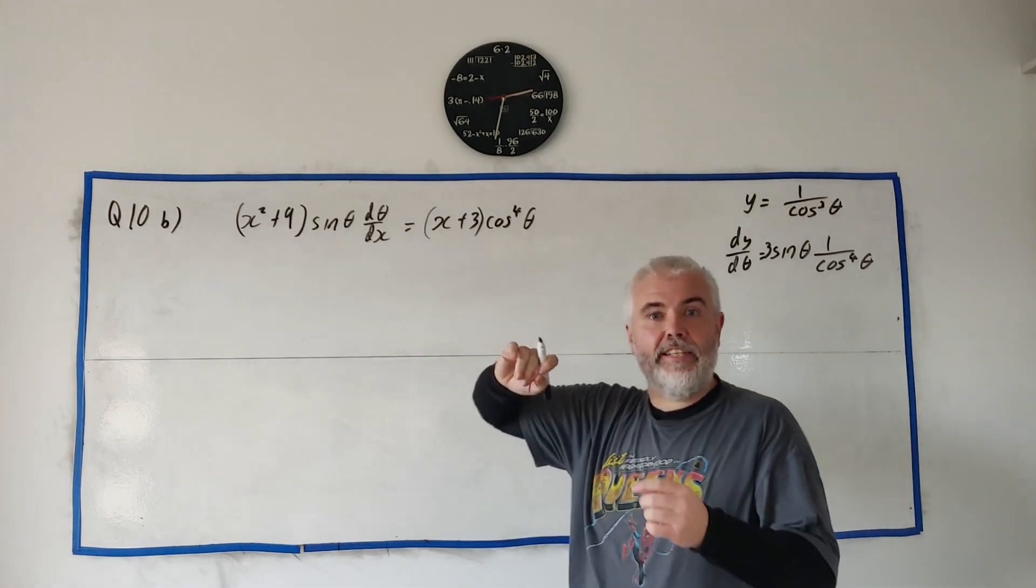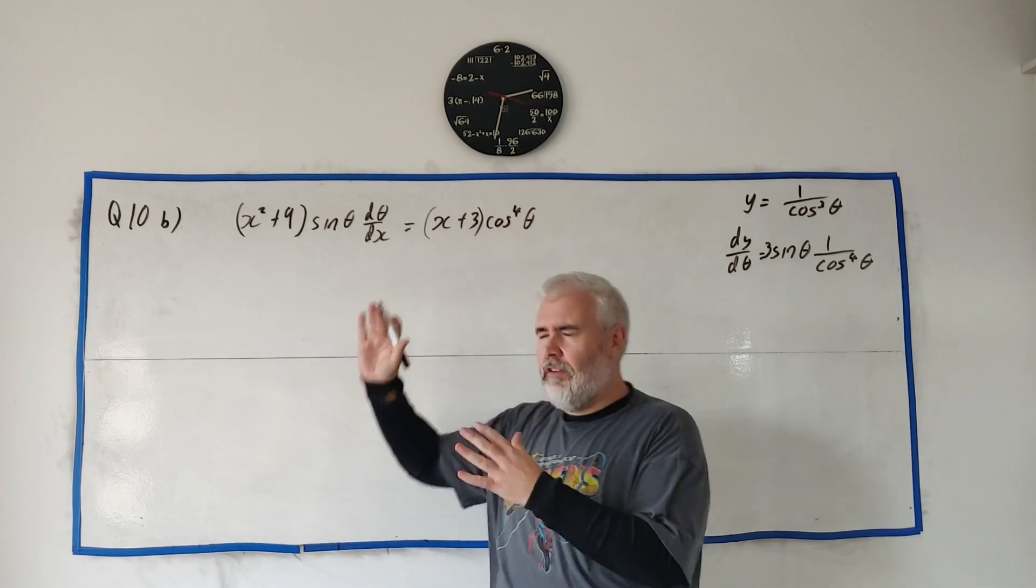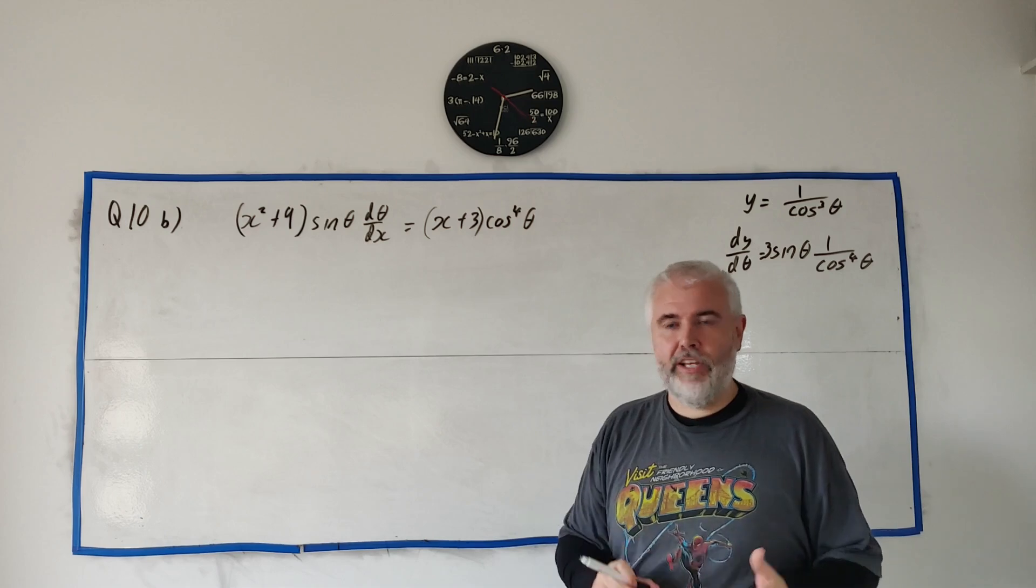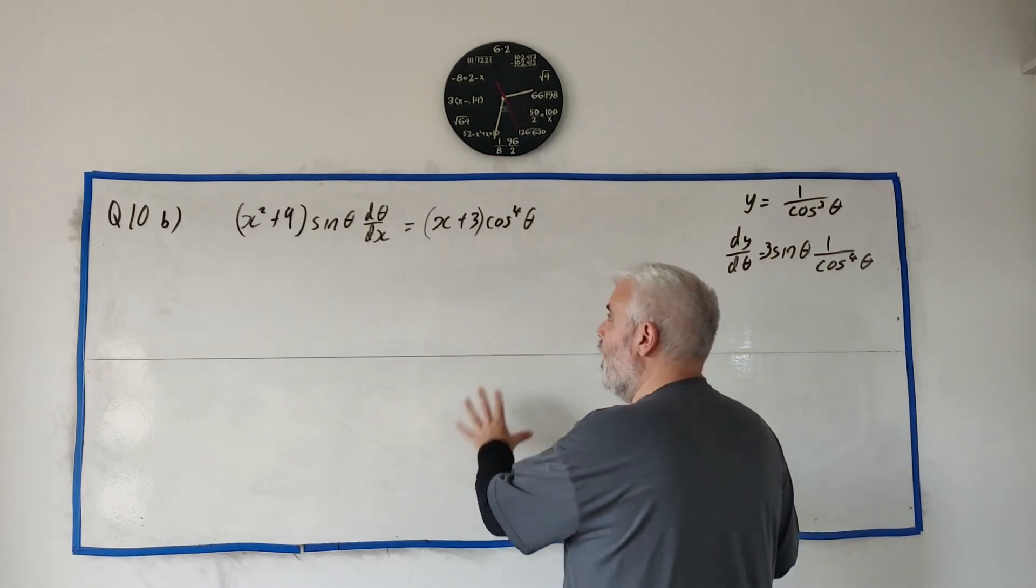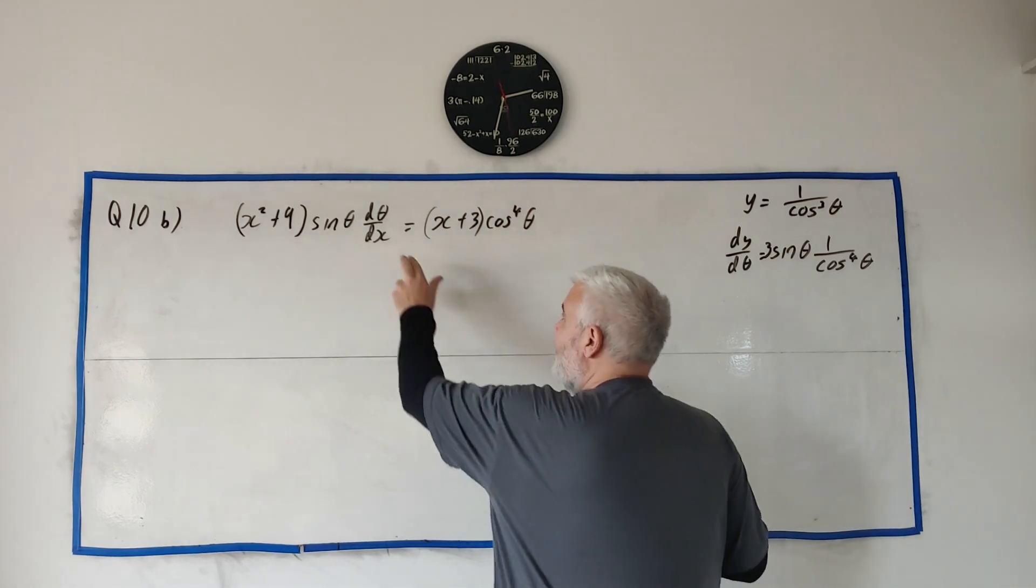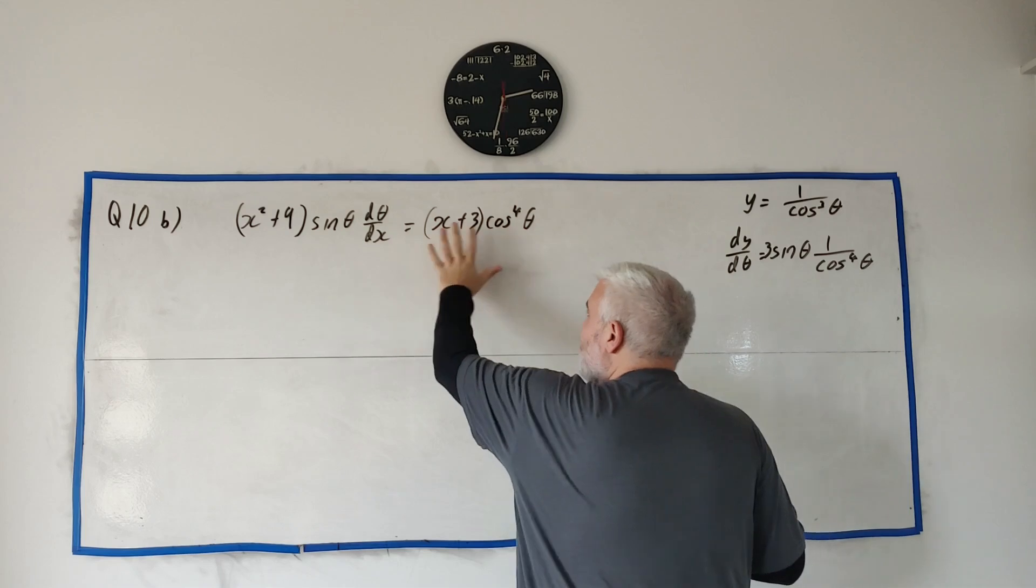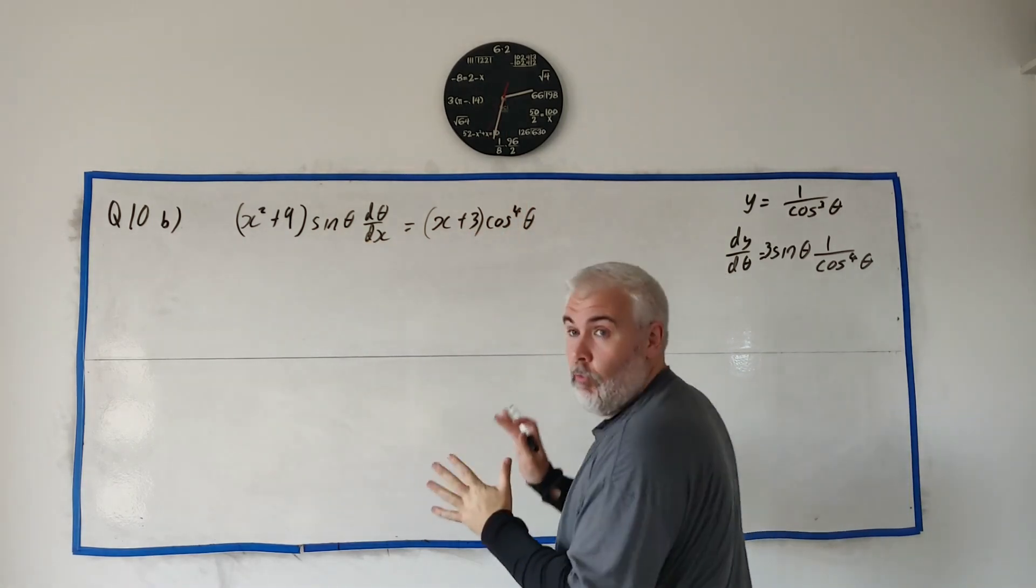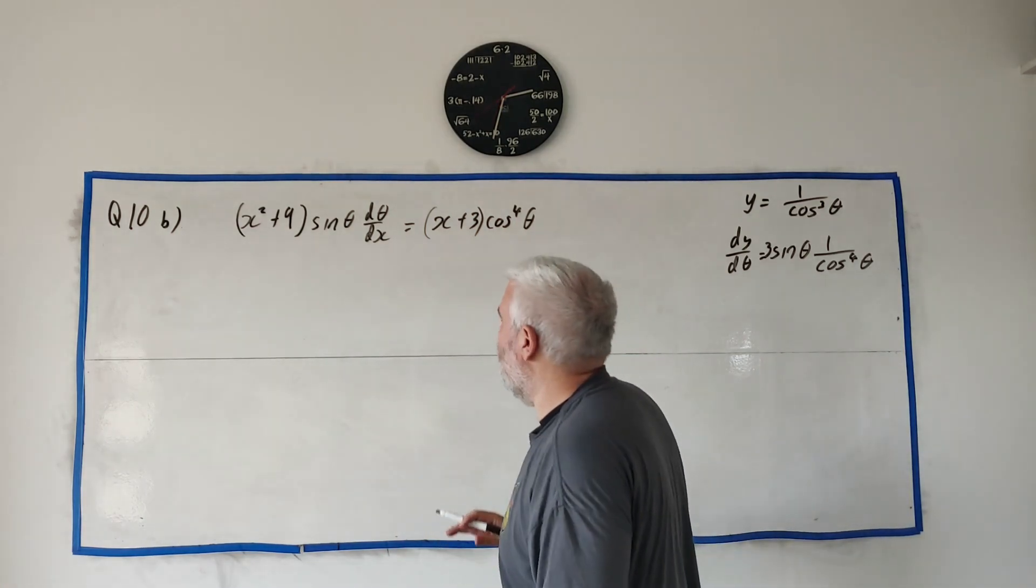We start with this differential equation. How we solve simple differential equations is we rearrange it so all the thetas are with d-theta on the left, all the x's are with dx on the right, and we integrate both sides.